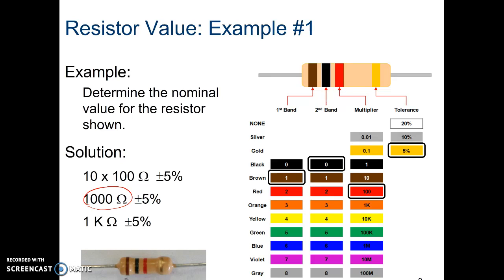So 10 times 100 actually gives you 1,000. So this particular resistor has a face value of 1,000 ohms with a tolerance of plus or minus 5%. So essentially what that means is when you actually go to get the measured value, this could be, you could measure anywhere between 995 to 1,000.